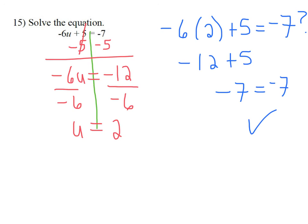The answer to the solution to the equation negative 6u plus 5 equals negative 7 is u equals 2.